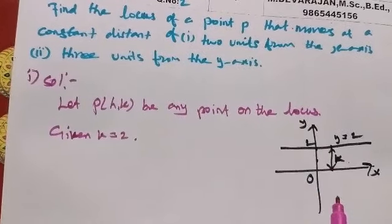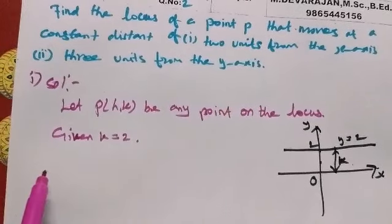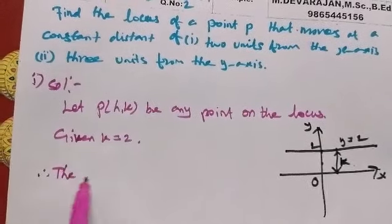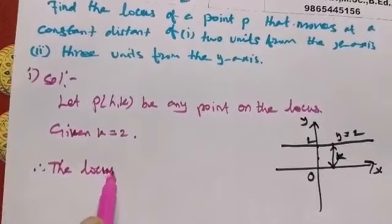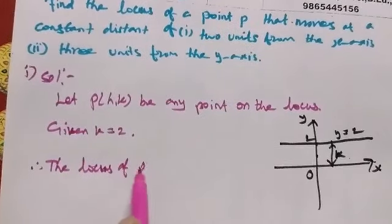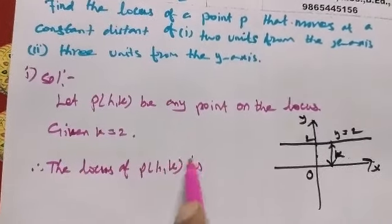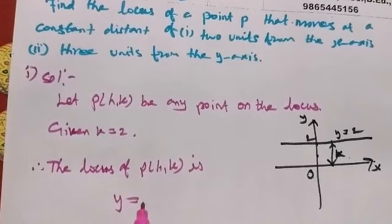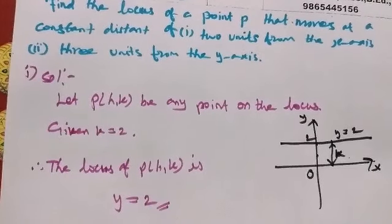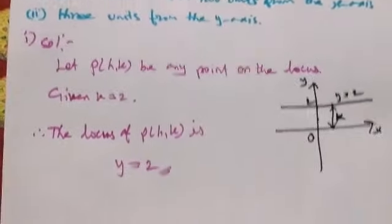The line parallel to X axis is y equal to k. Therefore, the locus of P is y equal to k. K is 2, so the locus is y = 2. Now the second one.